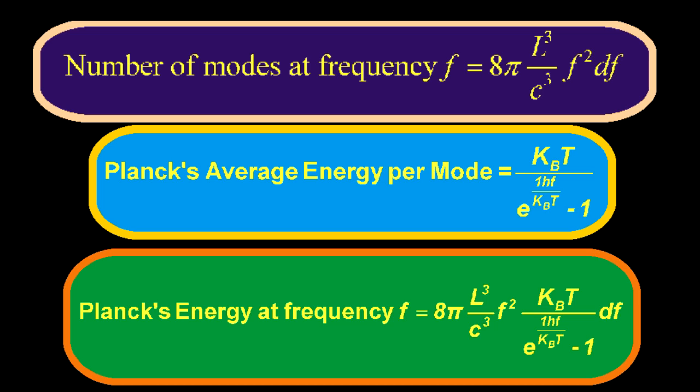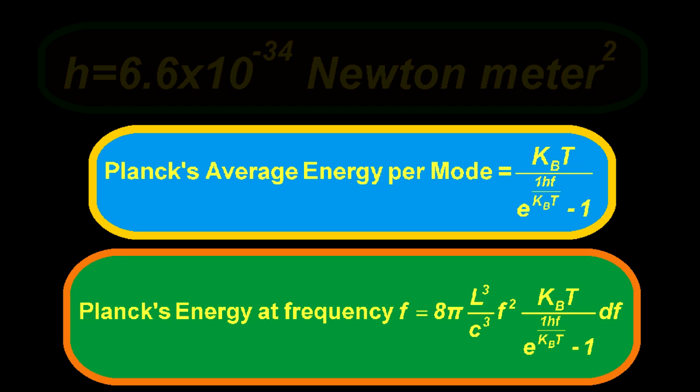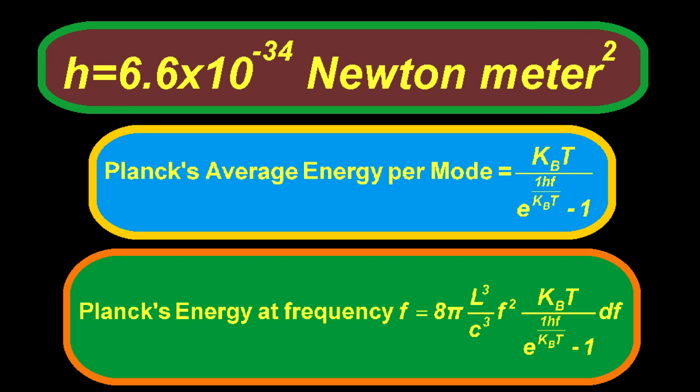When Max Planck first derived the equation in 1899, he found it would fit the experimental data if the constant h was adjusted to be 6.6 times 10 to the minus 34 newton meters squared. Little did he know that this constant would show up time and time again in explanations of many other phenomena.